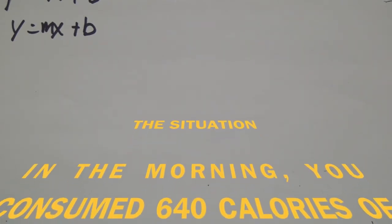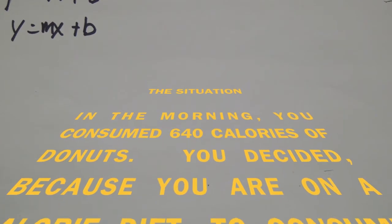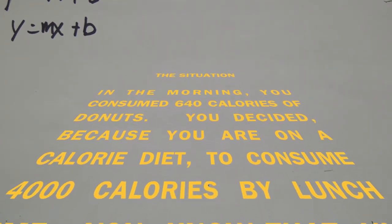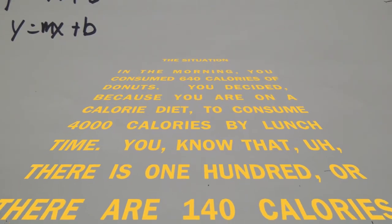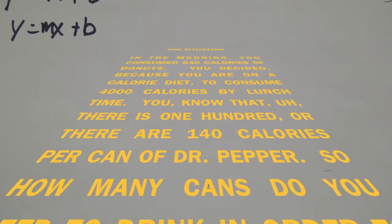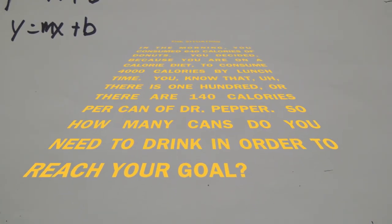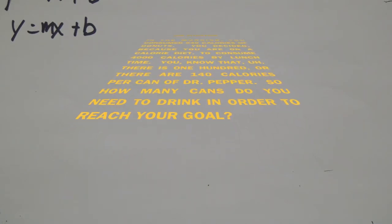Here's the situation. In the morning, you consumed 640 calories of donuts. You decided, because you're on a calorie diet, to consume 4,000 calories by lunchtime. You know that there are 140 calories per can of Dr. Pepper. So how many cans do you need to drink in order to reach your goal? Sounds simple enough.